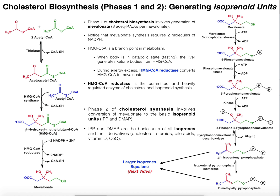3-phospho-5-pyrophosphomevalonate is an extremely activated molecule because the phosphate including that oxygen is a good leaving group. If a lone pair could be generated on an adjacent carbon, we could easily remove this phosphate and generate a double bond. It turns out the carboxyl group is removed as CO2, and that decarboxylation triggers the elimination of the phosphate. The result is a double bond and the phosphate is gone. This molecule is called delta-3 isopentanyl pyrophosphate, but we normally just call it isopentanyl pyrophosphate or IPP.